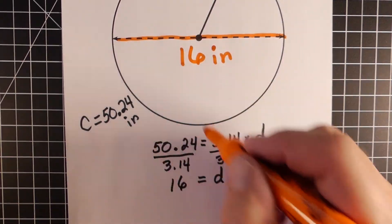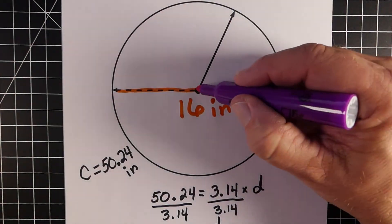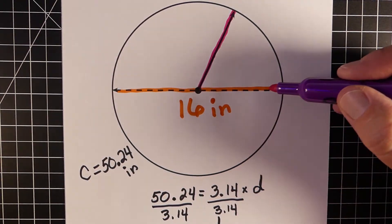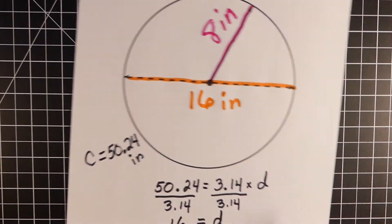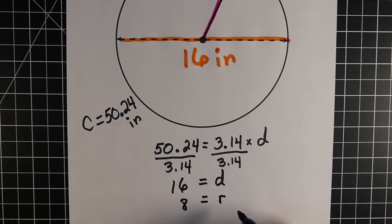Now, to find the radius is going to be pretty straightforward. The radius is just halfway across the circle, so it's just going to be half the diameter. So half of 16 would be 8, so it would be 8 inches. So there we go. So 8 is our radius.